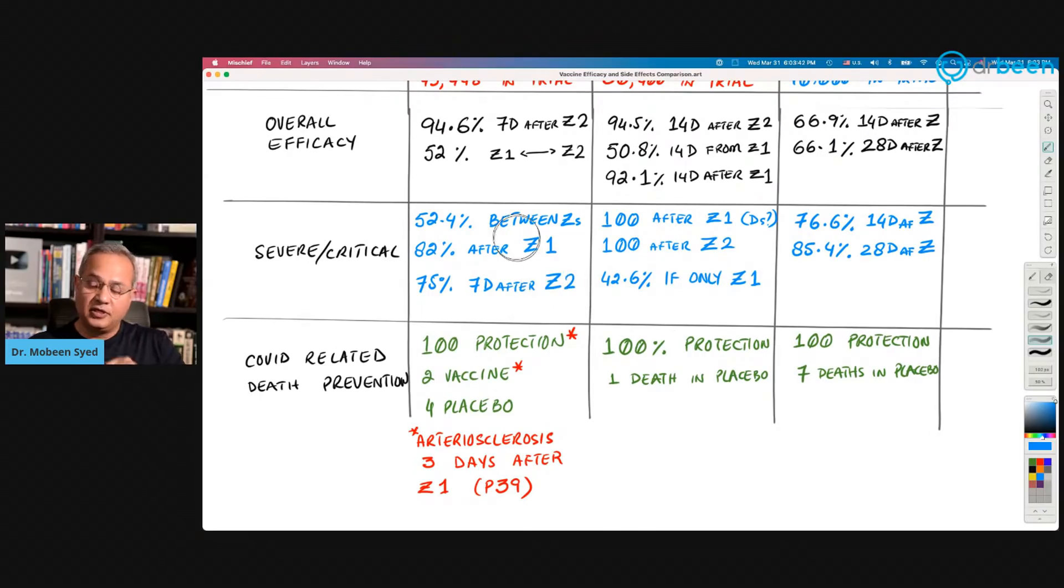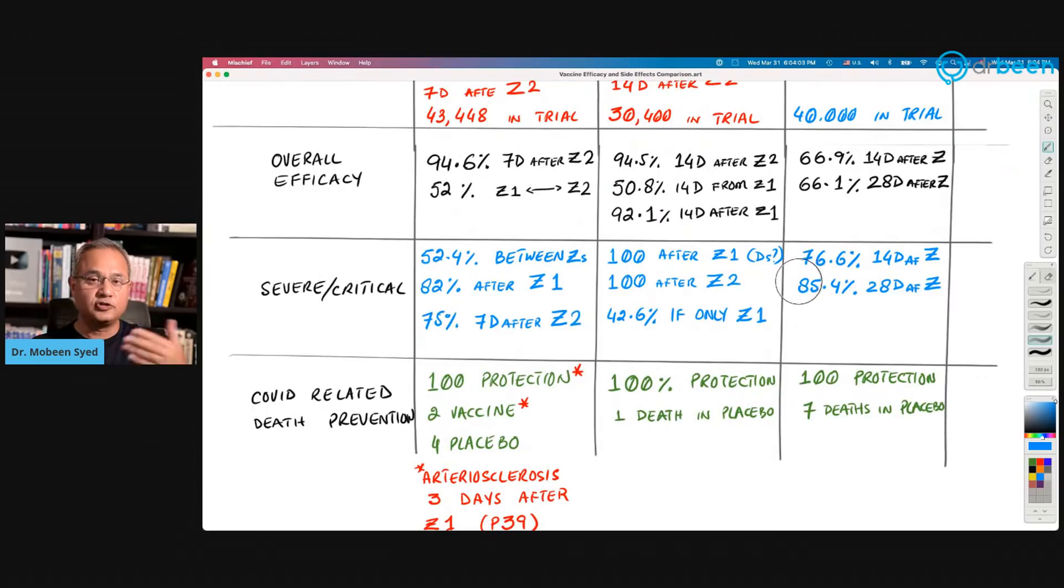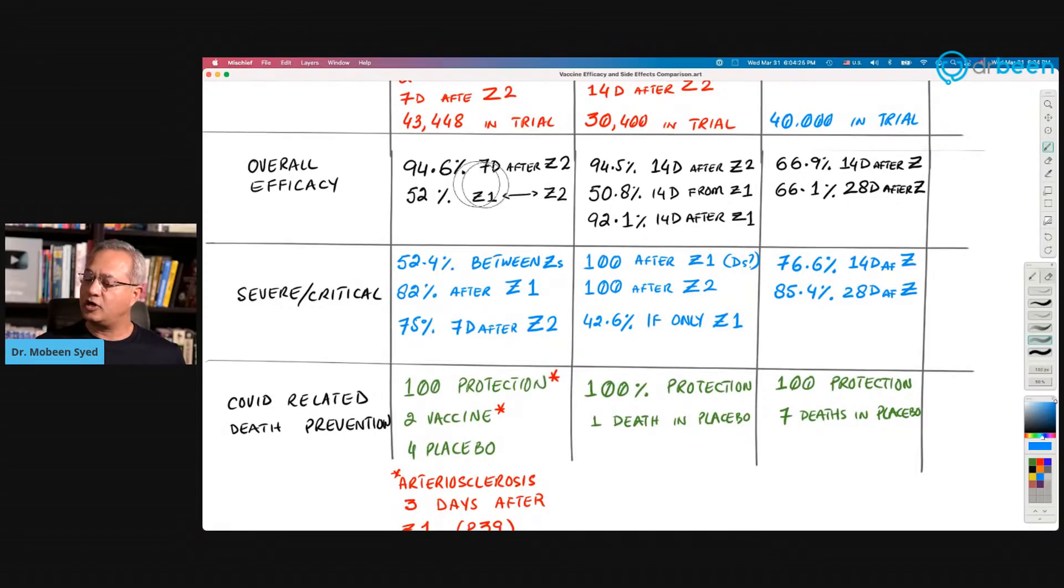Overall efficacy. The overall efficacy in case of Pfizer was 94.6 percent seven days after the second dose. Moderna, 94.5 percent 14 days after the second dose. And Johnson & Johnson, because they don't have two doses, their way of reporting was 66.9 percent 14 days after the dose, and then 66.1 percent efficacy after 28 days of the only one dose they give. That is the overall efficacy.